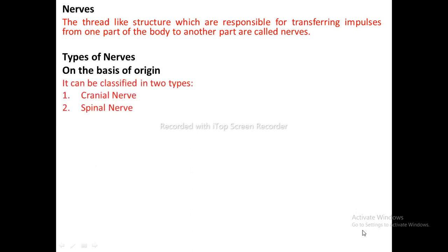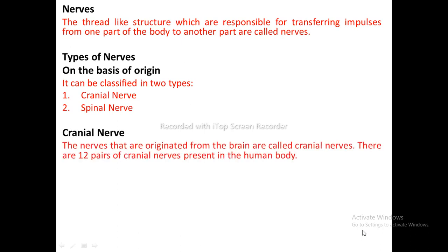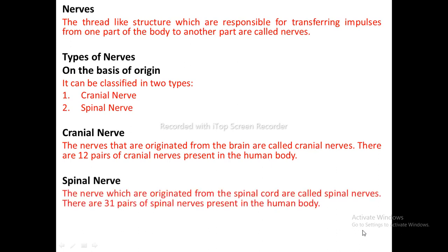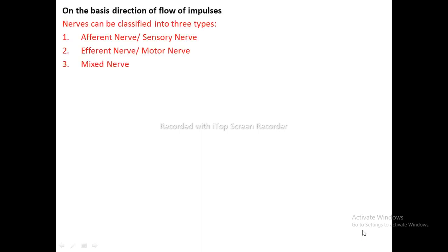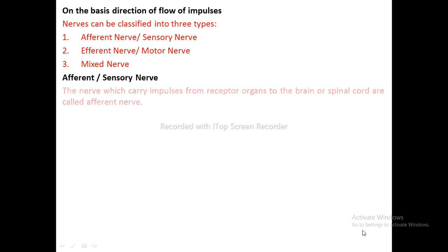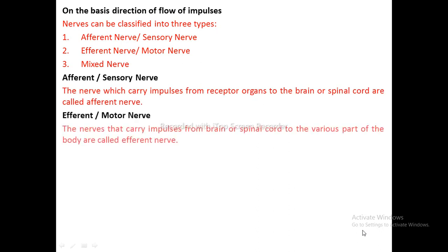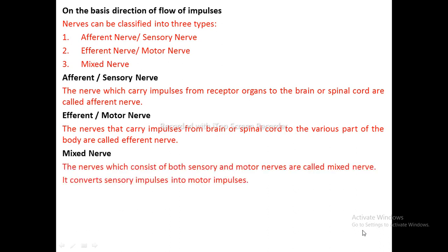Types of Nerves — On the basis of origin: cranial nerves (originating from the brain, 12 pairs) and spinal nerves (originating from the spinal cord, 31 pairs). On the basis of direction of impulses: afferent or sensory nerves carry impulses from receptor organs to the brain or spinal cord; efferent or motor nerves carry impulses from the brain or spinal cord to various parts of the body; and mixed nerves consist of both sensory and motor nerves and convert sensory impulses into motor impulses.